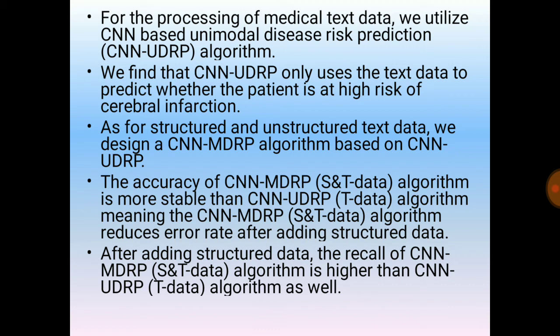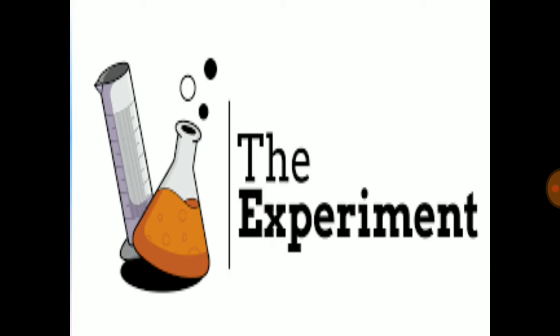We utilize the CNN-based unimodal disease risk prediction algorithm (CNN UDRP) to process unstructured data. CNN UDRP uses only text data to predict whether the patient is at high risk of cerebral infarction. Hence, for combined structured and unstructured text data, we design a CNN MDRP algorithm based on CNN UDRP. The accuracy of the CNN MDRP algorithm is more stable than CNN UDRP and it reduces the error rate after adding structured data. The recall of the CNN MDRP algorithm is also much higher than CNN UDRP after adding structured data.